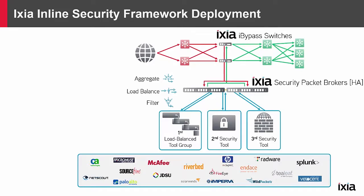The Ixia bypass switches you see at the top replace multiple inline security devices, each of which presents a single point of failure, and provide just one point that touches the rest of the network. This allows you to segregate the rest of the security environment. These bypass switches can be programmed to fail open or fail closed based on your policy. Additionally, they can provide directional heartbeat or monitoring so that you can bring these up and down as it meets your security needs, and they also can provide automated recovery whenever they come back.